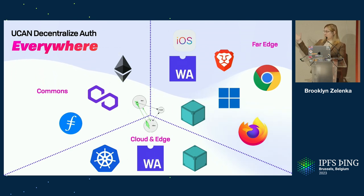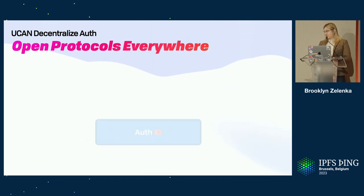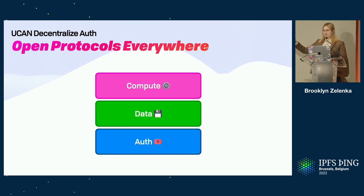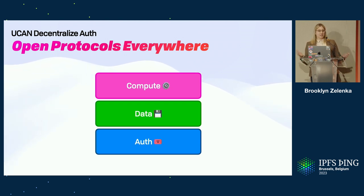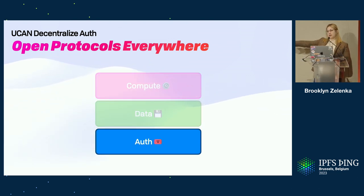When we started at Fission, we wanted to always get to compute, which we're now just starting to do. But to do compute you need to do data, and to do data you need to do auth — at least if you want to do data in production. Having everything be totally public and accessible all the time isn't really a production use case. So with UCAN, we're solving this bottom auth layer.